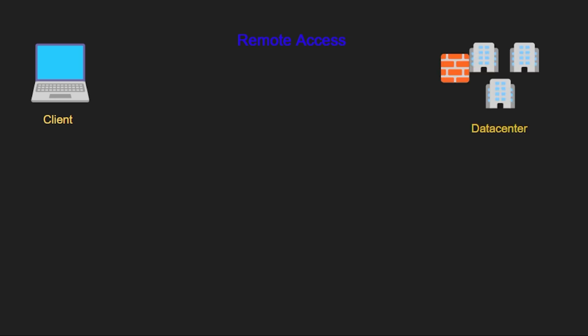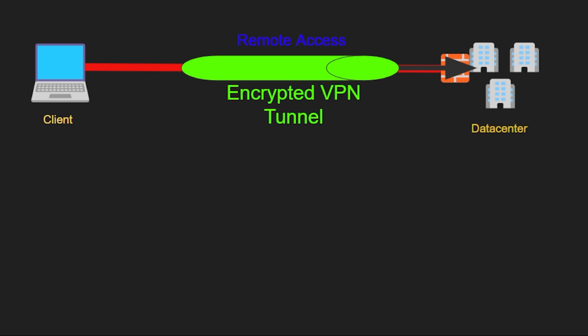Next, I want to show you two ways that you typically connect through a VPN and how they work, to give you a better understanding of how a VPN can connect to different clients. The first type of VPN connection you will see in most organizations is remote access. This is typically between a client and a data center, which usually has a firewall or two on the external part of the network — you connect to that firewall for VPN access.